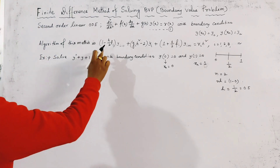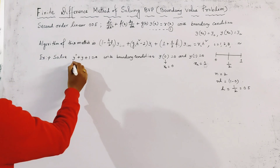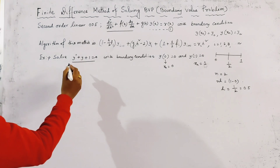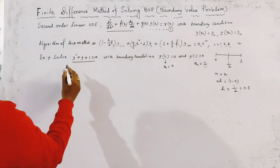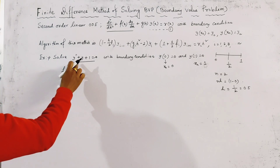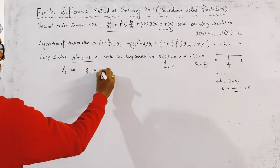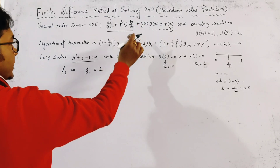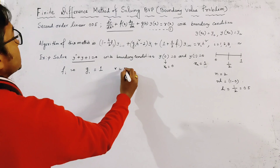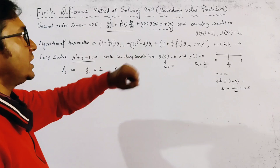Using the algorithm of the finite difference method, we compare the given equation with the general second-degree equation. By comparing, f_i = 0 because there is no term containing y', g_i = 1.